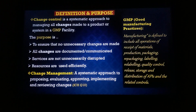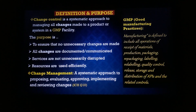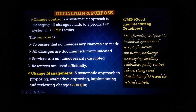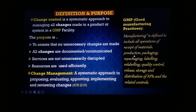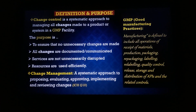Let's see the definition. Change control is a systematic approach to managing all changes made to a product, system, or facility in the GMP environment. GMP — Good Manufacturing Practices — is defined to include all operations: receipt of materials, production, packaging, repackaging, labeling, relabeling, quality control and release, storage, and distribution of the API and relevant controls.